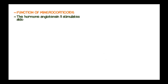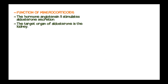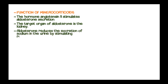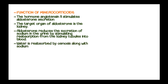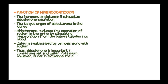The hormone angiotensin II stimulates aldosterone secretion. The target organ of aldosterone is the kidney. Aldosterone reduces excretion of sodium in the urine by stimulating reabsorption from the kidney tubules into the blood. Water is then reabsorbed by osmosis along with sodium. Thus, aldosterone is important in conserving salt and water, but potassium is lost in exchange for sodium.